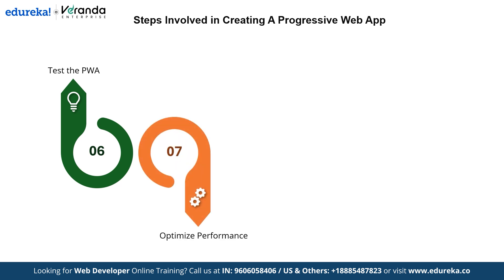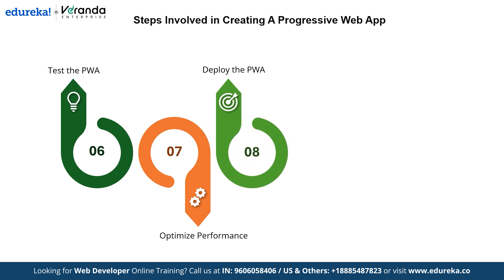After testing, we proceed to optimize the performance. This step focuses on improving load times, reducing resource usage and ensuring the app meets performance benchmarks. A well-optimized app provides a smooth experience for users. With the app optimized, it's time to deploy the progressive web app. This involves hosting the app on a secure server and making it accessible for users. Deployment marks the beginning of the app's journey in the real world.